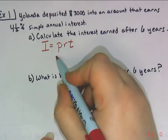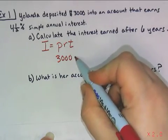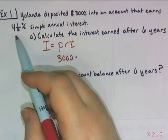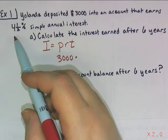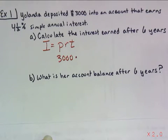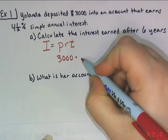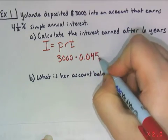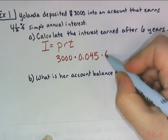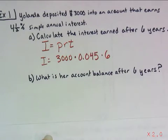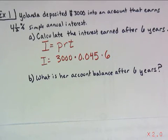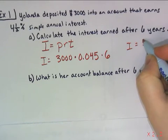P, the principal amount, is three thousand dollars. R is the interest rate as a decimal — four and a half percent. Don't convert it to 4.5; that's still 4.5 percent. To convert a percent to a decimal, we divide by 100 or move the decimal back two places, giving us 0.045. T, time in years, is six years. Plugging those values into the formula gives us our value for interest — using a calculator, the interest comes out to eight hundred and ten dollars.